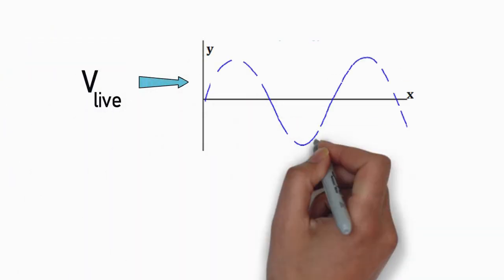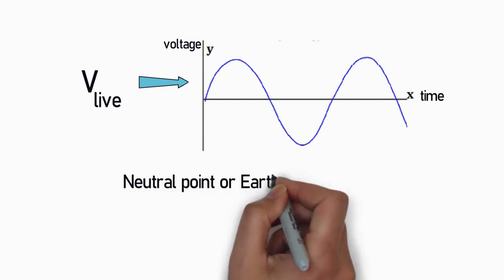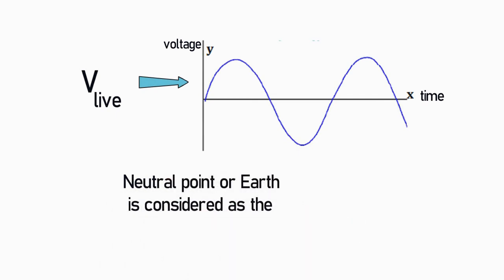Voltage at live is of sinusoidal nature and it is measured with respect to neutral or earth. That is why earth is also referred to as ground similar to the usage in low voltage DC circuits.